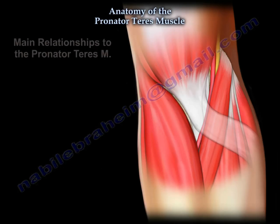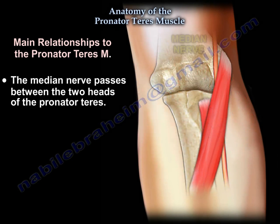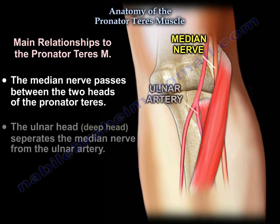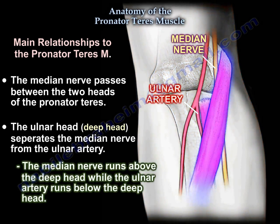The main relationship of the pronator teres muscle is that the median nerve passes between the two heads of the pronator teres. The ulnar head, the deep head, separates the median nerve from the ulnar artery. The median nerve runs above the deep head, while the ulnar artery runs below the deep head.